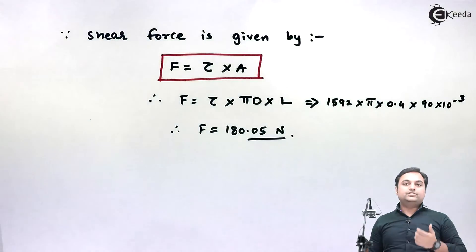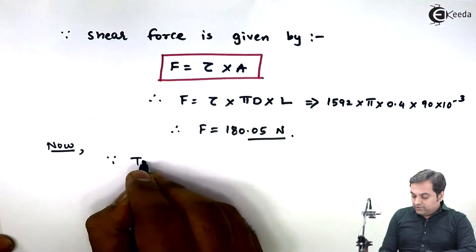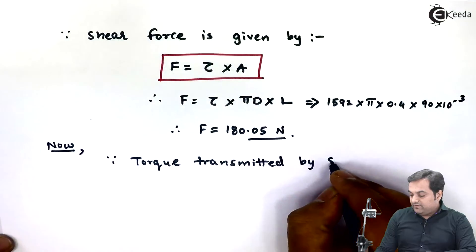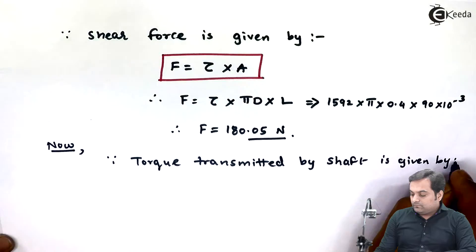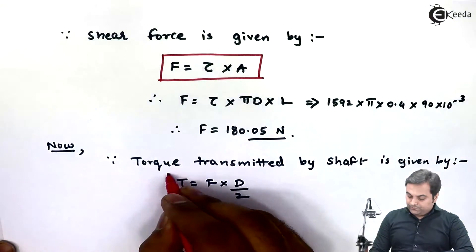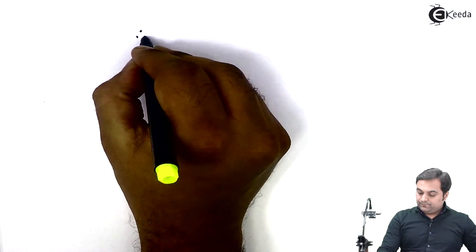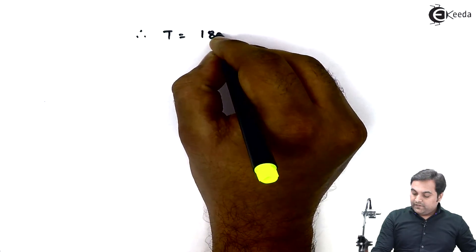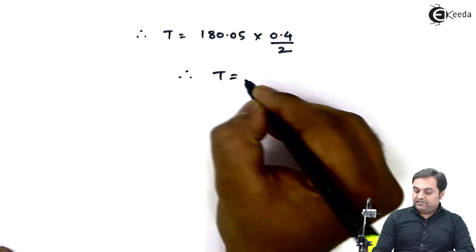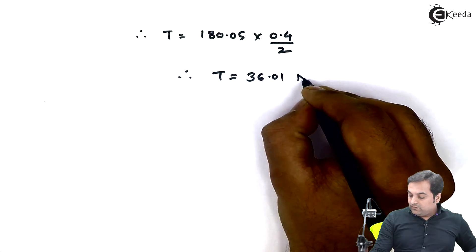Now that we have shear force, we can calculate torque. Torque transmitted by the shaft is given by T = F × D/2. Substituting: T = 180.05 × 0.4/2, which gives torque T = 36.01 N·m.